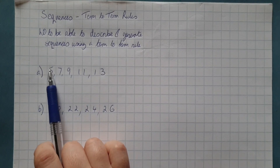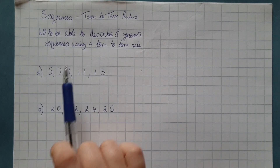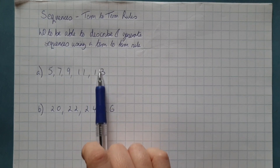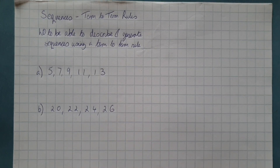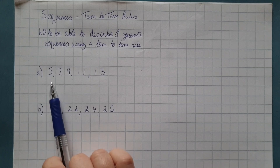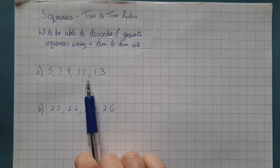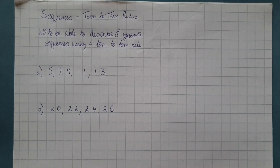So this is the first term, this is the second term, third term, fourth term, and so on. So a term-to-term rule is going to give us the pattern of the steps.